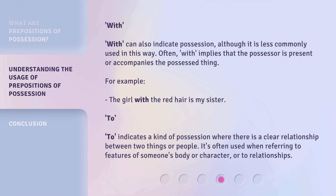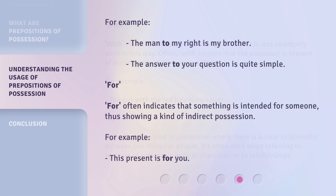"To" indicates a kind of possession where there is a clear relationship between two things or people. It's often used when referring to features of someone's body or character, or to relationships. For example: the man to my right is my brother; the answer to your question is quite simple.